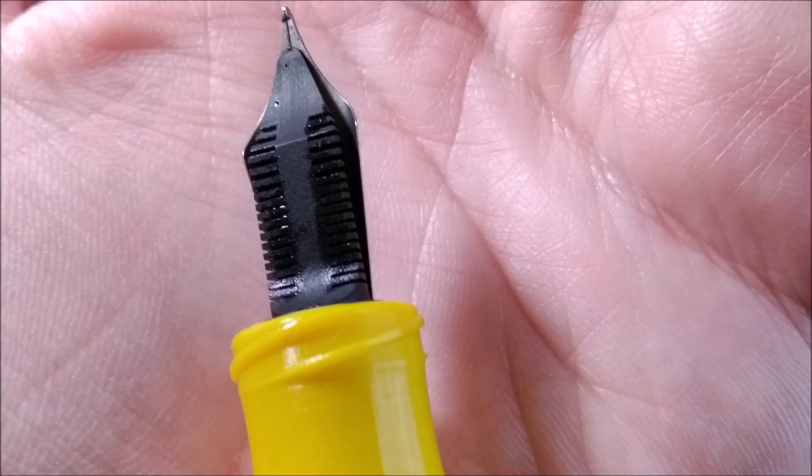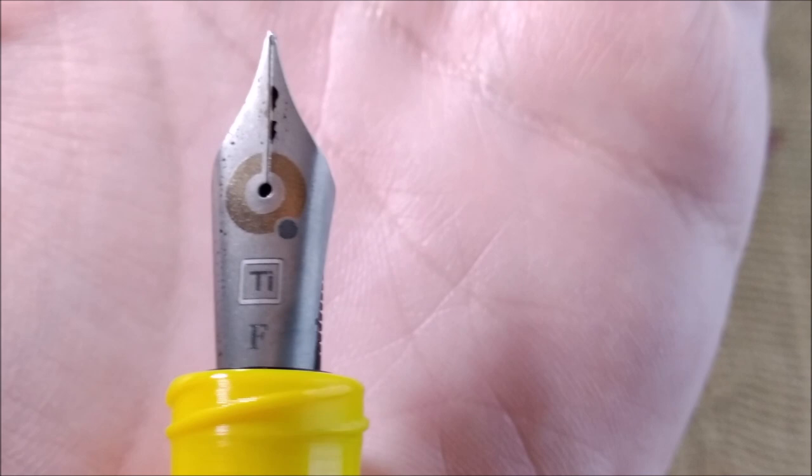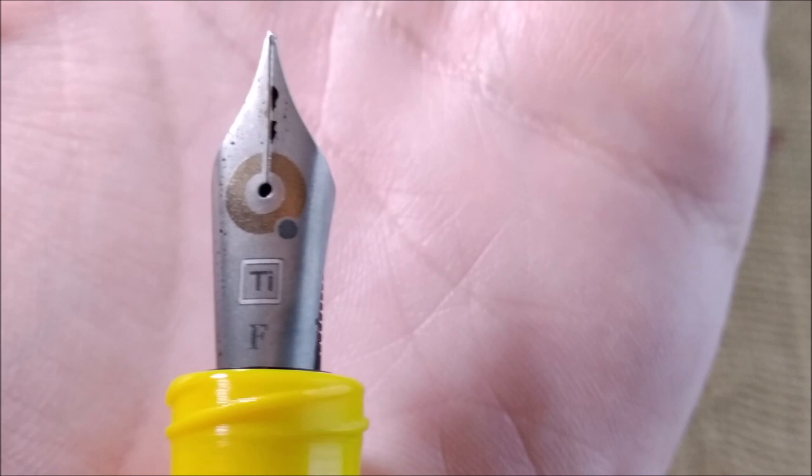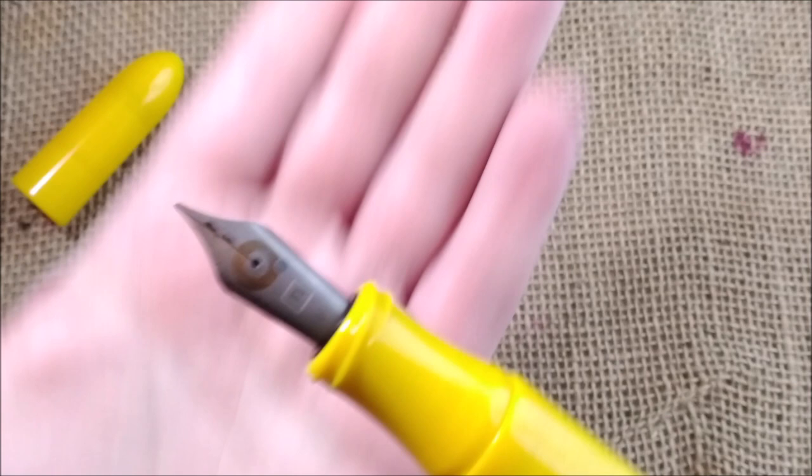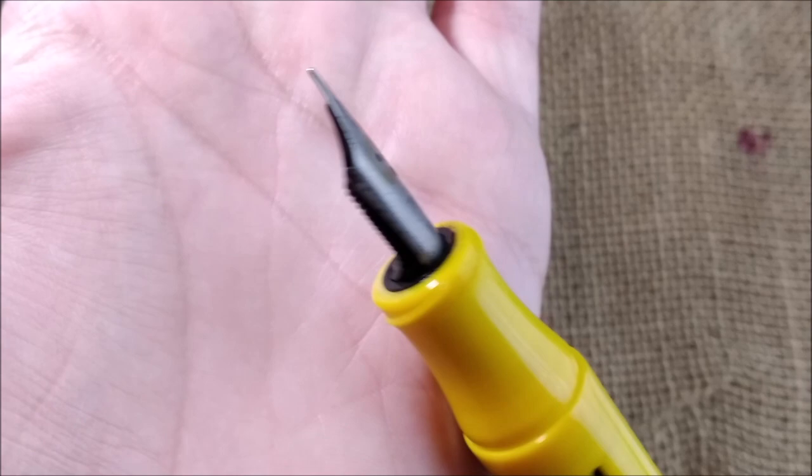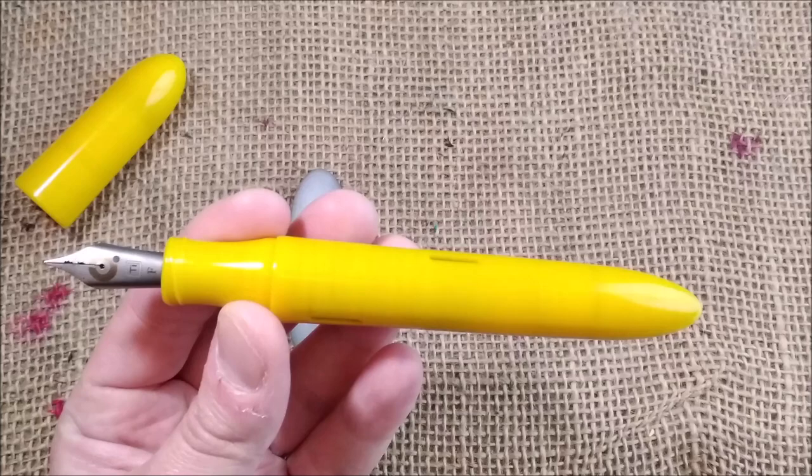The nib features an ebonite feed and on the other side you will see a titanium, a very beautiful titanium nib. This nib is made by Bock and it is a number eight nib. It's quite nice because it is a large nib and I am one of those people that like big nibs although I like also pens with small nibs, but I really enjoy this.